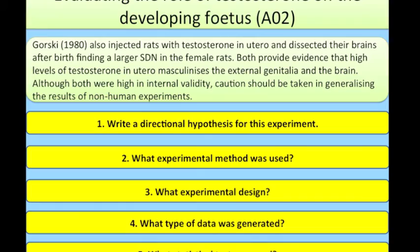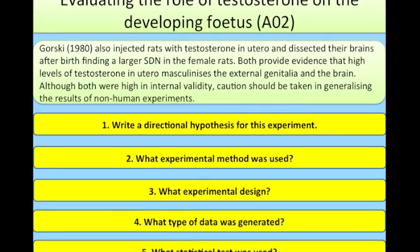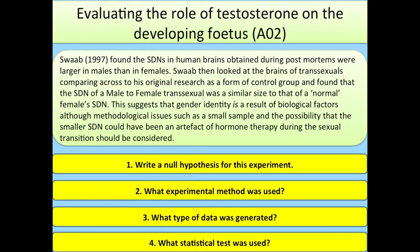Both studies provide evidence that high levels of testosterone in utero masculinises the external genitalia and the brain. Although both were high in internal validity, caution should be taken in generalising the results of non-human experiments. Swab (1997) found that the SDNs in human brains obtained during post-mortems were larger in males than females. Swab then looked at the brains of transsexuals, using his original research as a control group, and found that the SDN of a male-to-female transsexual was a similar size to that of a normal female's SDN. This suggests that gender identity is a result of biological factors, although methodological issues — such as a small sample and the possibility that the smaller SDN could have been an artefact of hormone therapy during the sexual transition — should be considered.